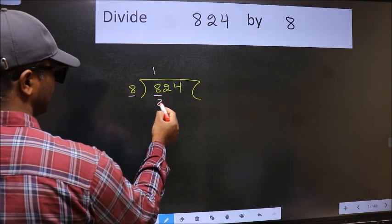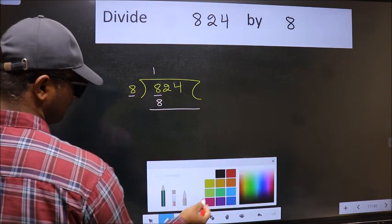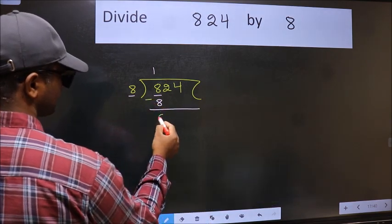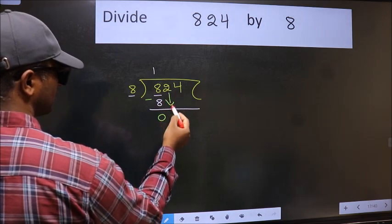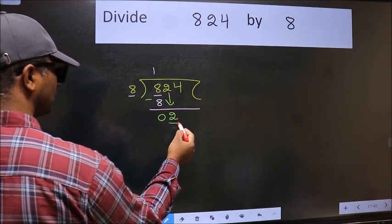8 times 1 is 8. Now we should subtract. We get 0. After this, bring down the beside number, 2, down. Now here we have 2 and here 8.